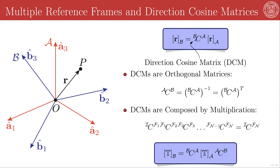You will have previously encountered direction cosine matrices, perhaps as rotation matrices or rotation operators. These are, in fact, the component representations of a rotation dyadic. This is something that is incredibly important when studying rigid body mechanics. For us, we're just going to take the result and use it because it's a very useful result.